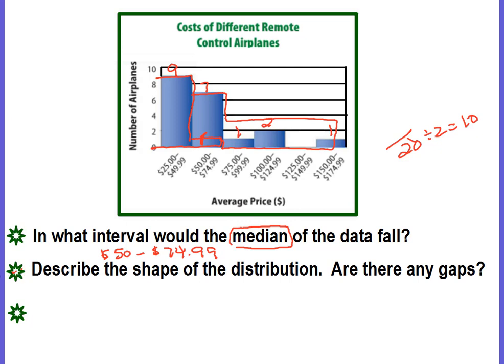Describe the shape of the distribution. Are there any gaps? Okay, so let me go ahead and erase everything that I've drawn on here, just to make it a little bit easier to work with. And we do know there's a gap. There's a gap right here at $125 to $149 because there is no data. So there is a gap.